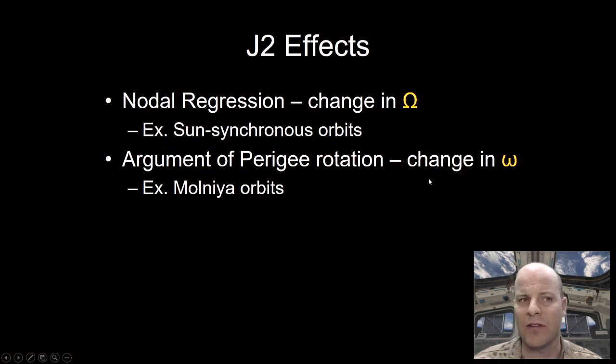There are, however, orbits that we utilize that take advantage of this nodal regression and argument of perigee rotation rate or non-rate, as you'll find in just a minute. The first one we're going to explore in detail is that of a sun-synchronous orbit.